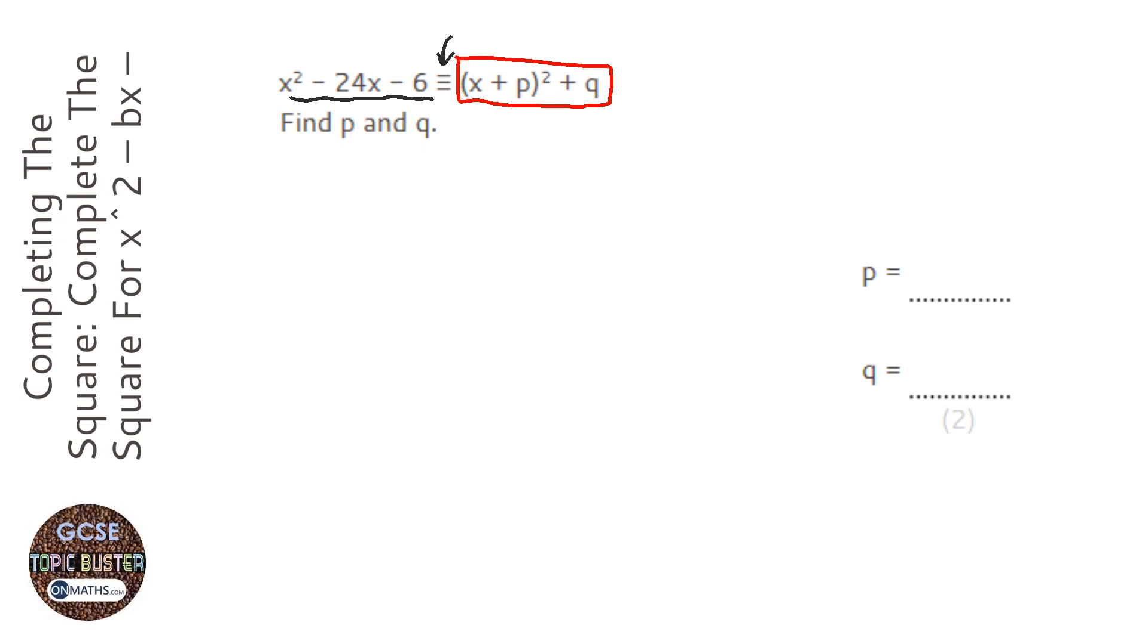This sign here, the triple equal sign, just means it's equivalent to, means it works for all values of x, it means it's an identity.